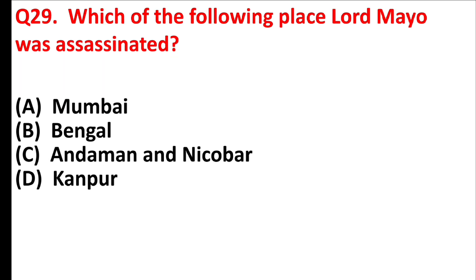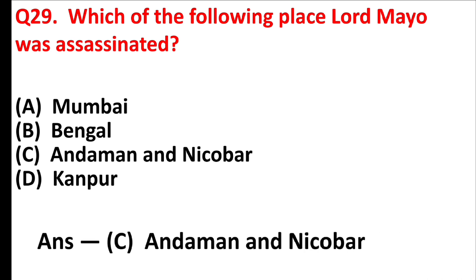At which of the following places was Lord Mayo assassinated? Answer is option C: Andaman and Nicobar.